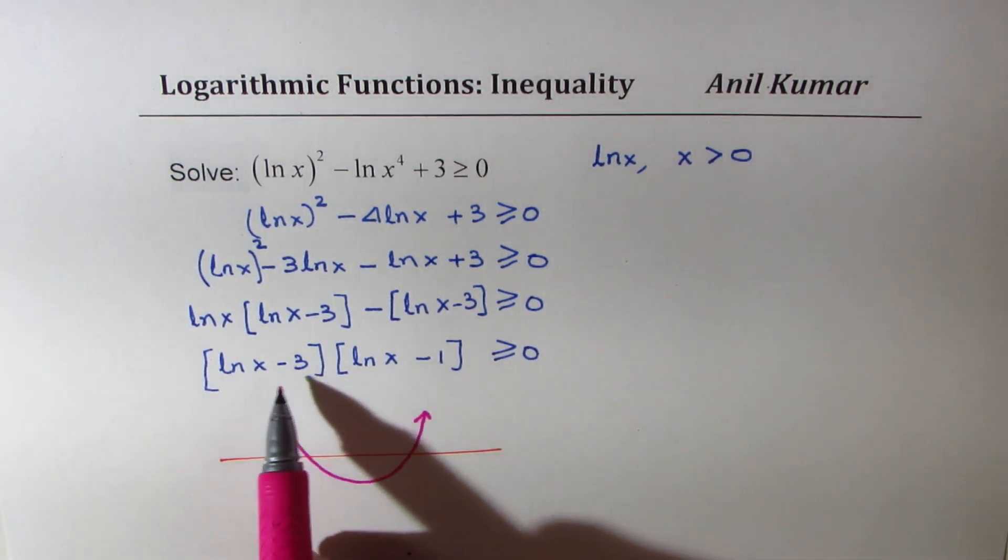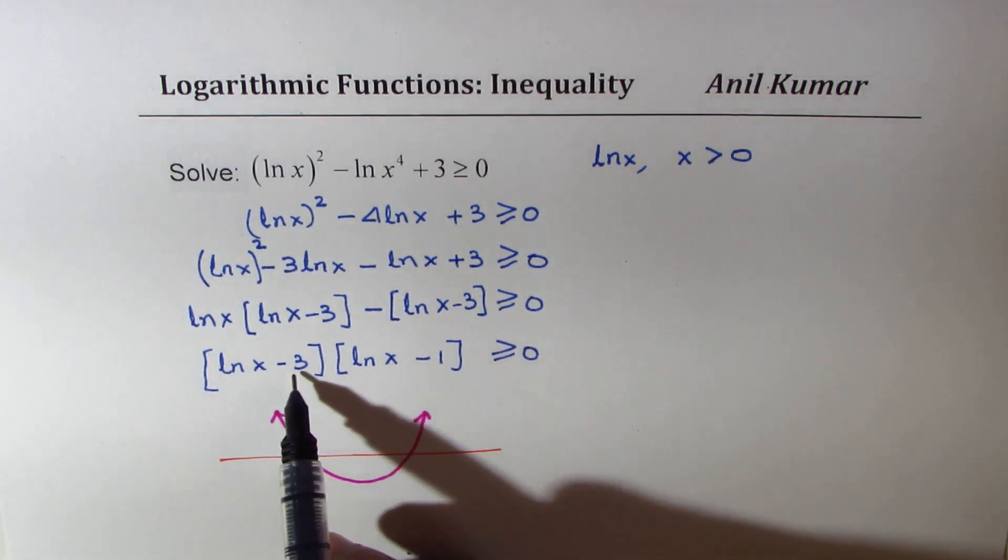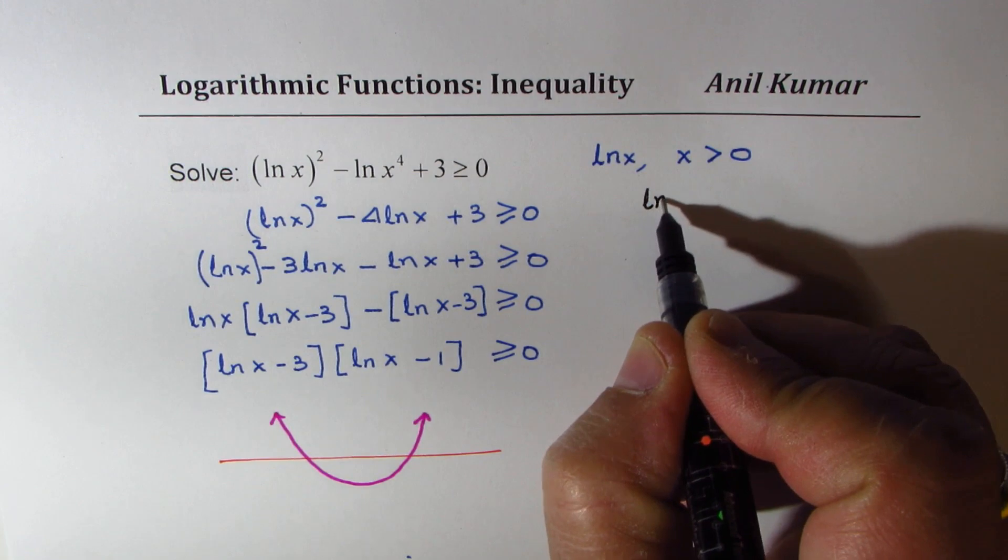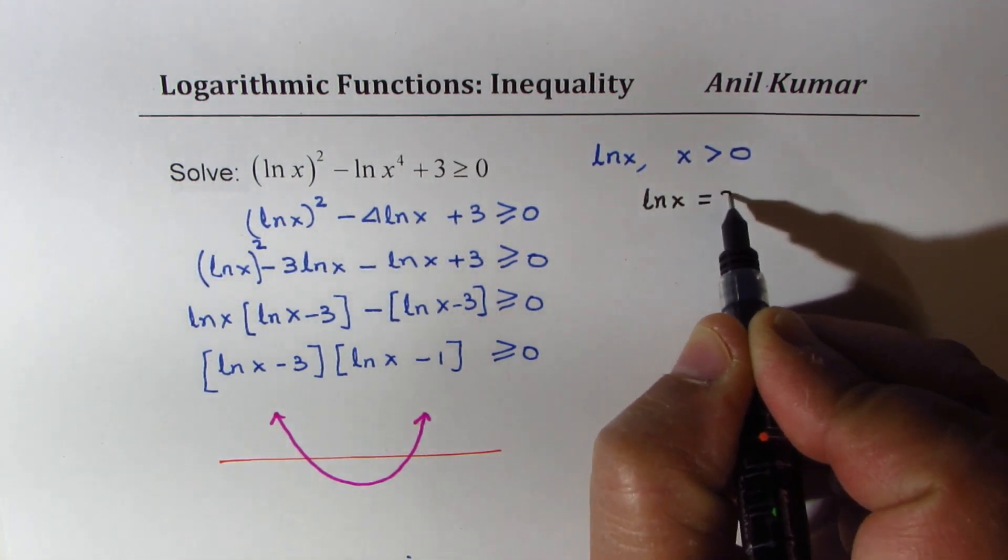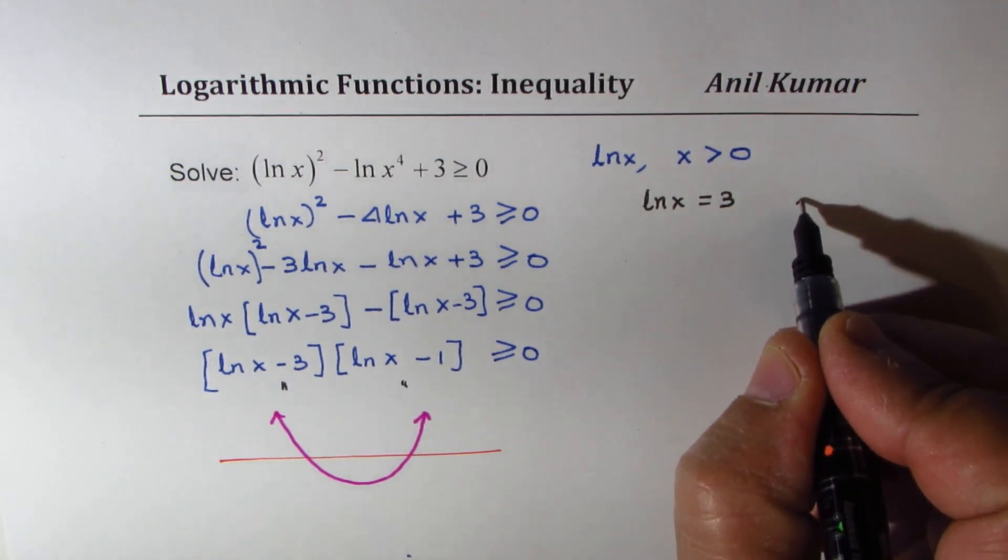Where the two zeros are at ln x equals to 3. So one zero is at ln x equals to 3, and the other at ln x equals to 1.